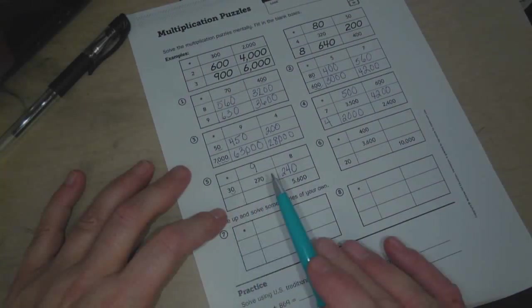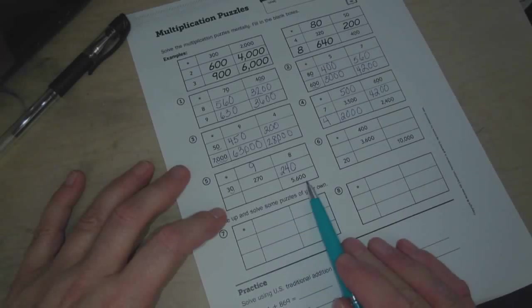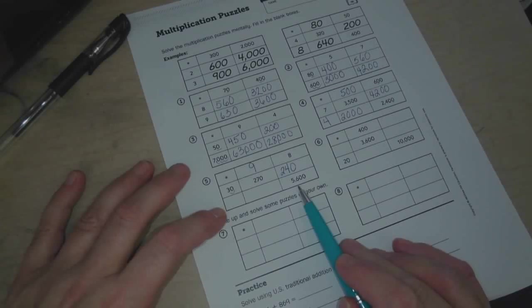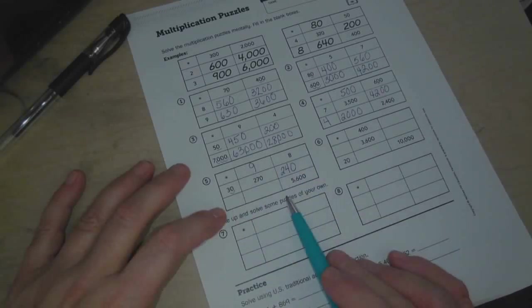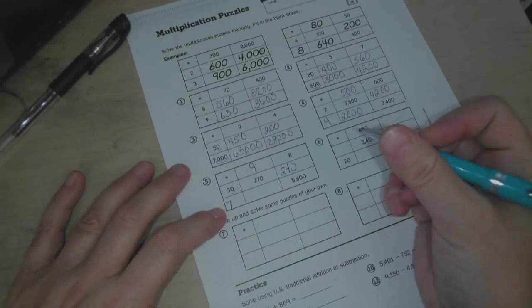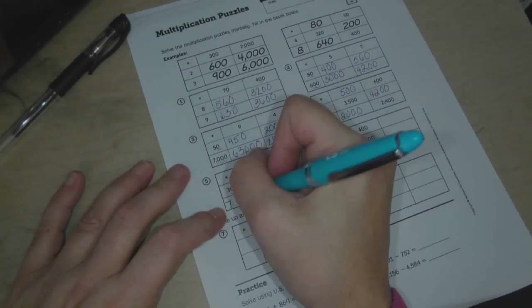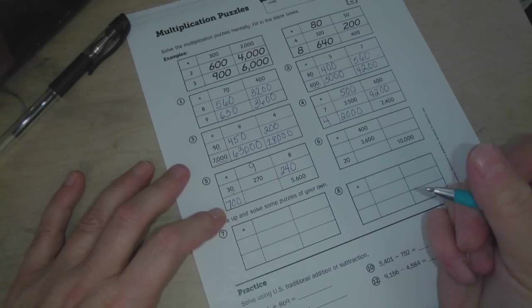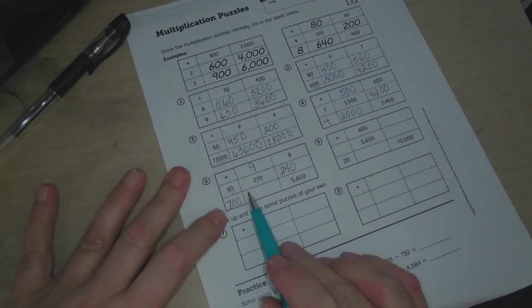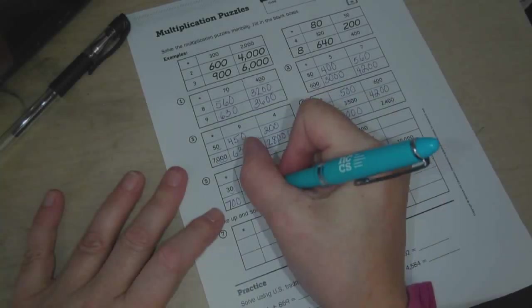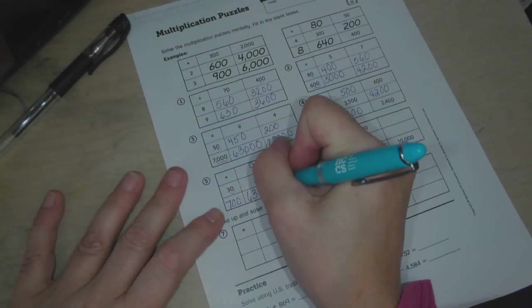So now, again, we have to figure out this one and that one. So, something times 8 equals 5,600. Well, what times 8 equals 56? 7. 7 times 8 equals 56, and there's two zeros. There's no zeros here, so that means the two zeros must go here. And now we can fill this one in. 700 times 9 equals, well, 7 times 9 is 63. Two zeros.